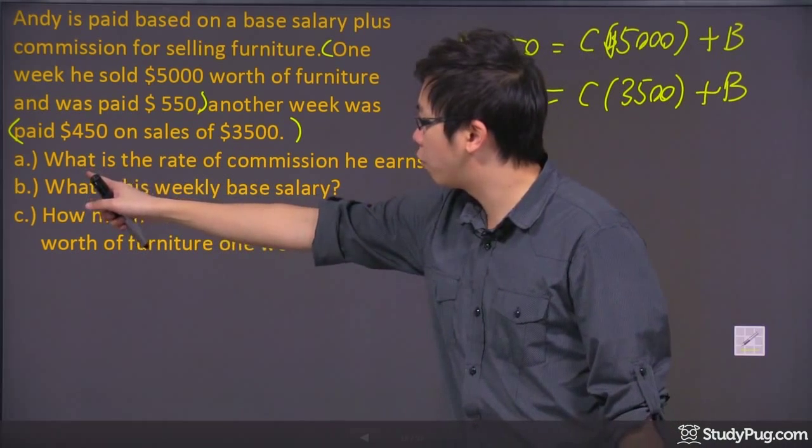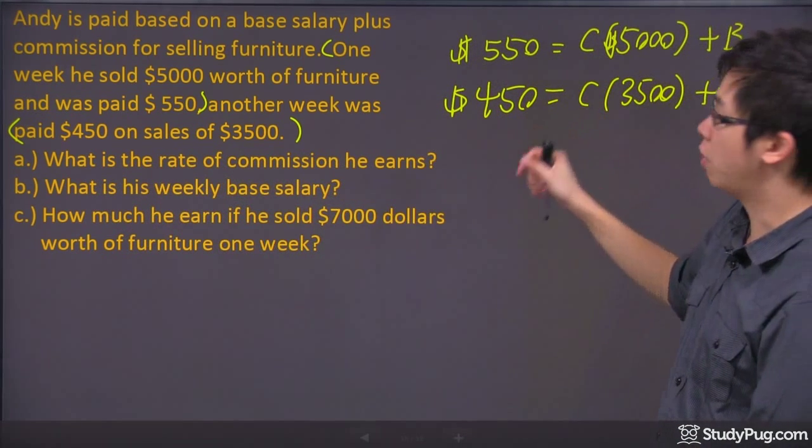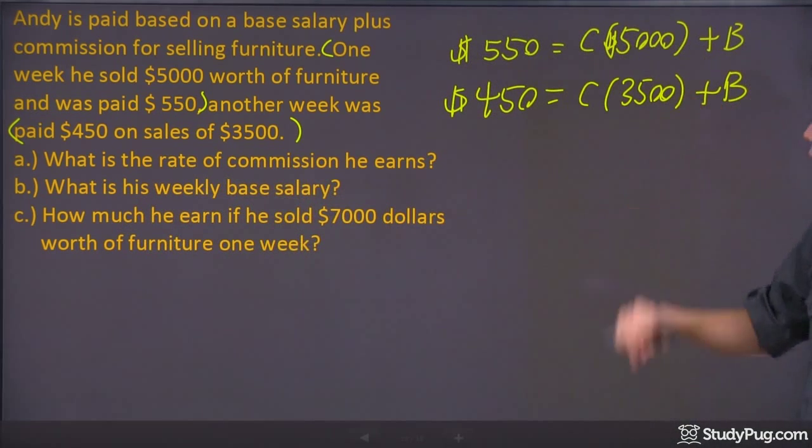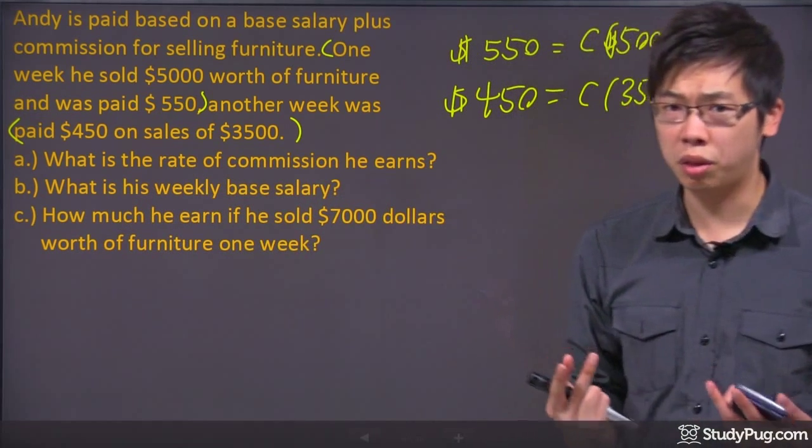A, B, C right here, we have: what is the rate of commission? That is the commission C right here. And what is my weekly base salary? And that is the B. To figure these two things out...